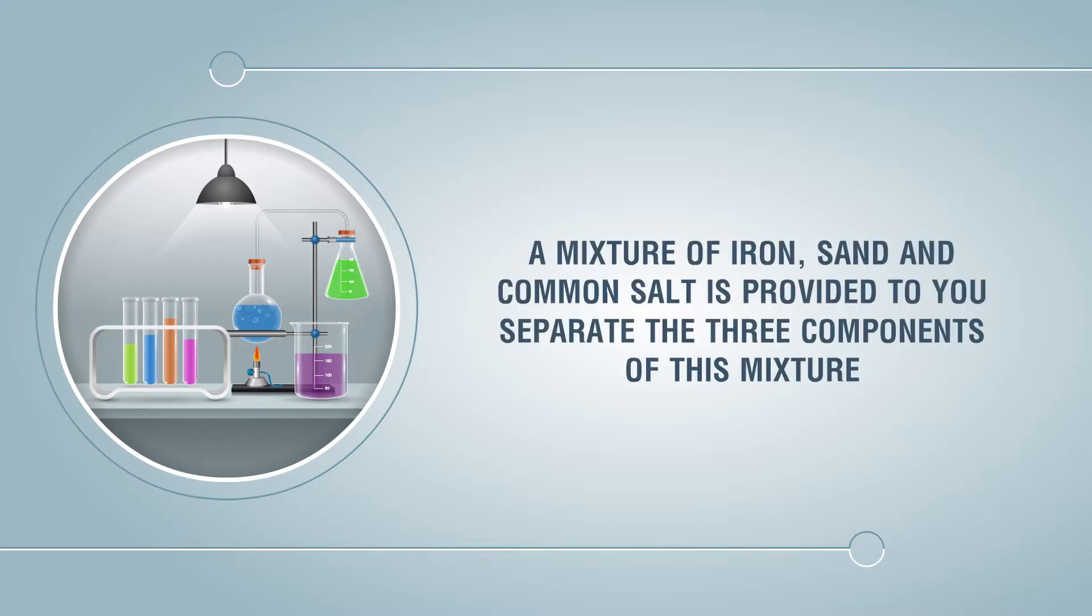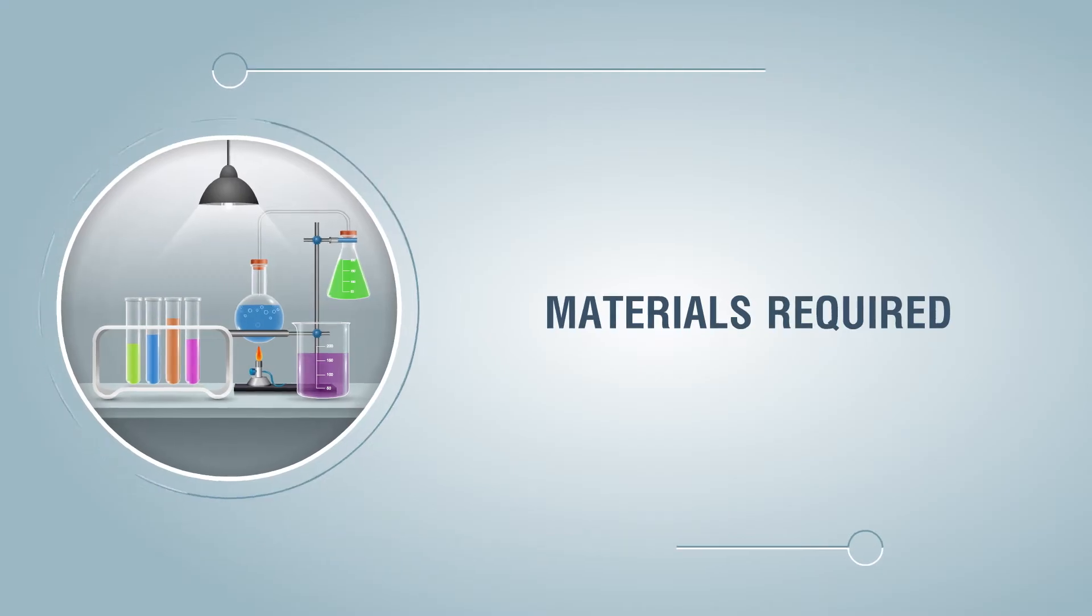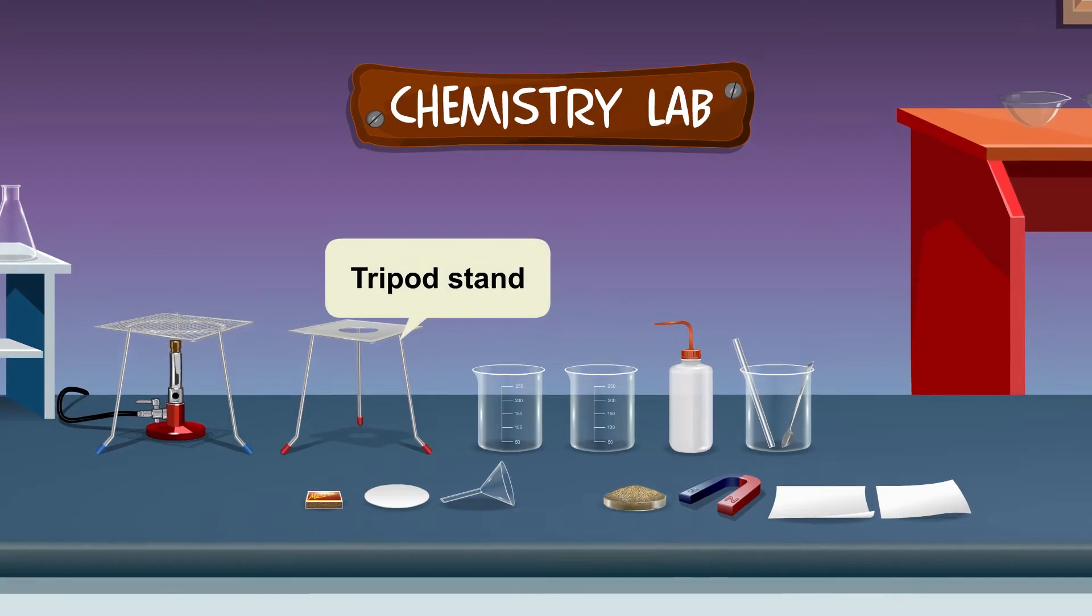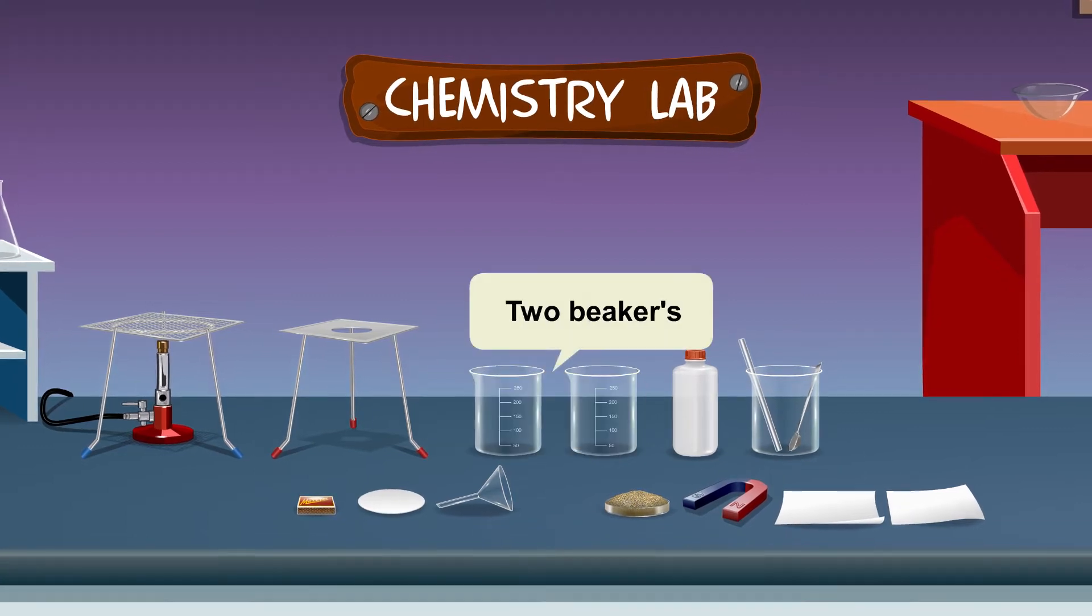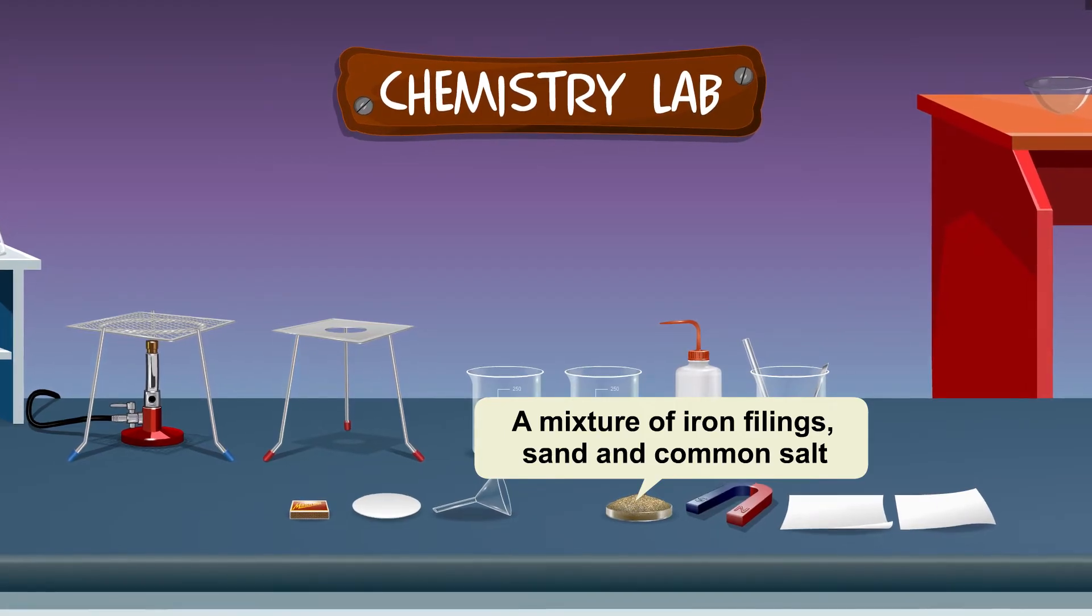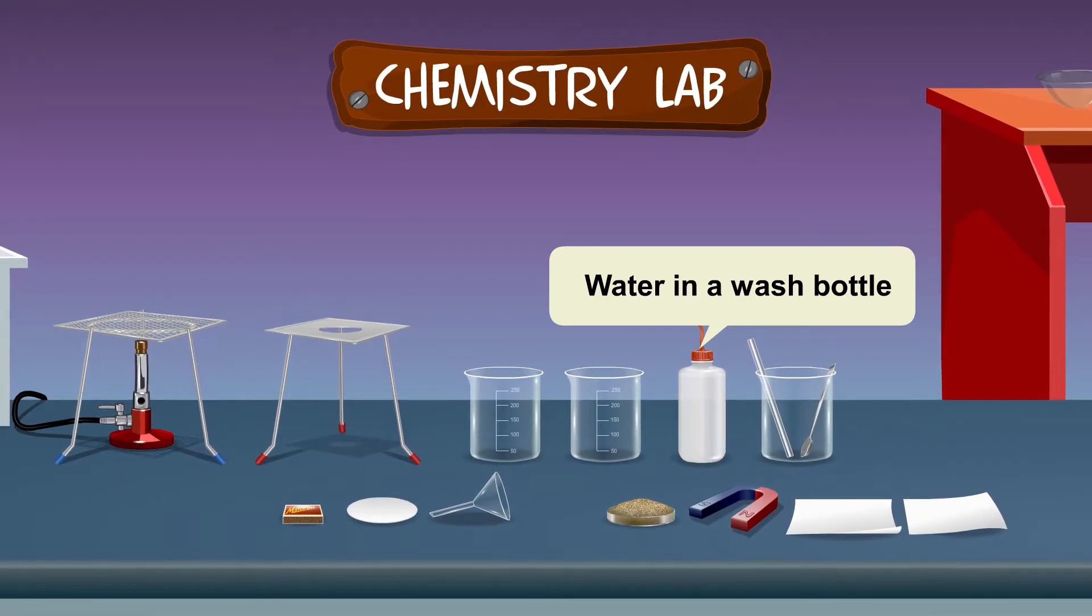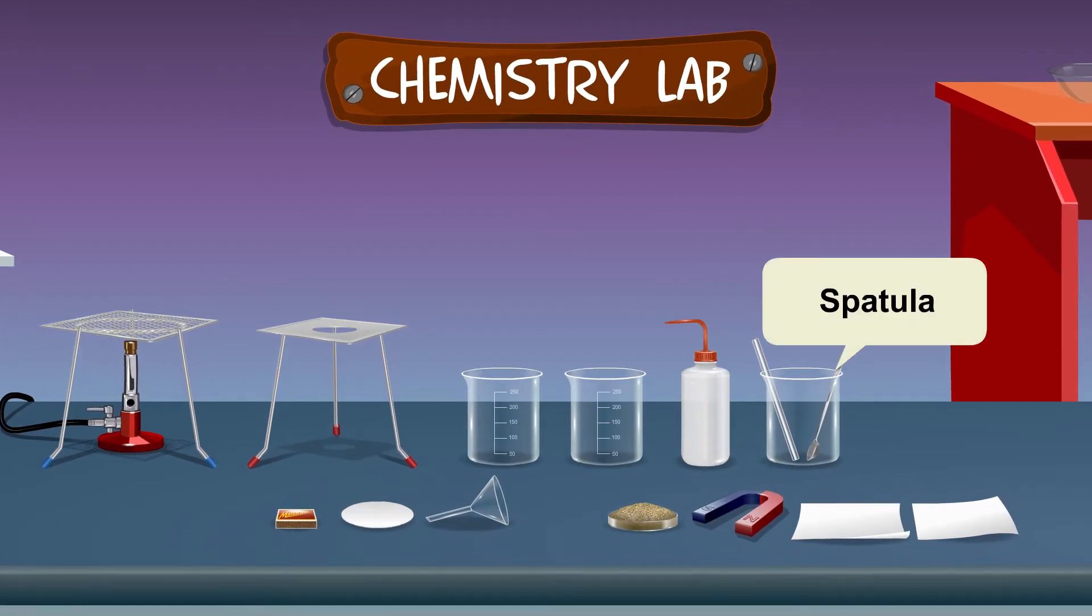A mixture of iron, sand and common salt is provided to you. Separate the three components of this mixture. Materials required: wire gauze, burner, tripod stand, matchbox, filter paper, funnel, two beakers, a mixture of iron filings, sand and common salt kept in a petri dish, water in a wash bottle, magnet piece, glass rod, spatula, two sheets of paper.